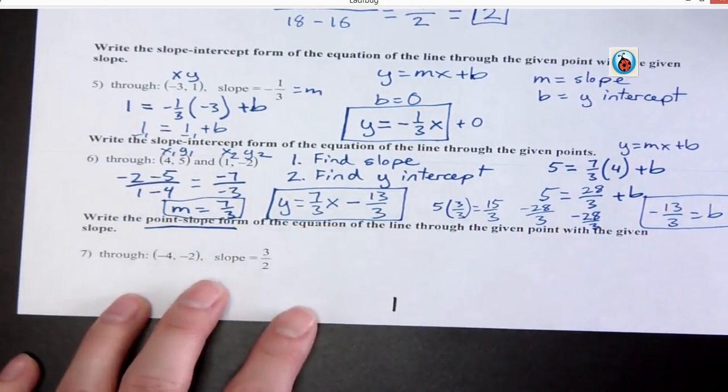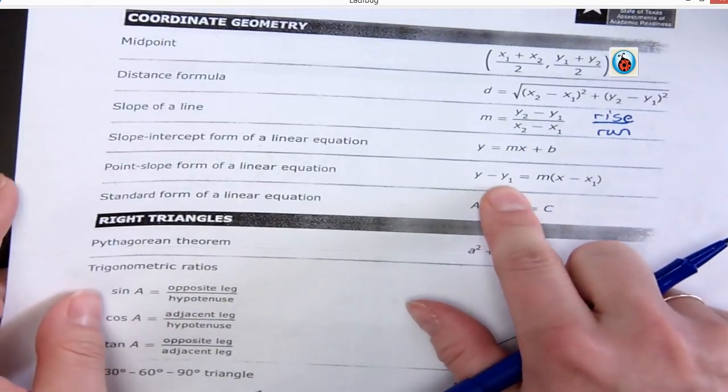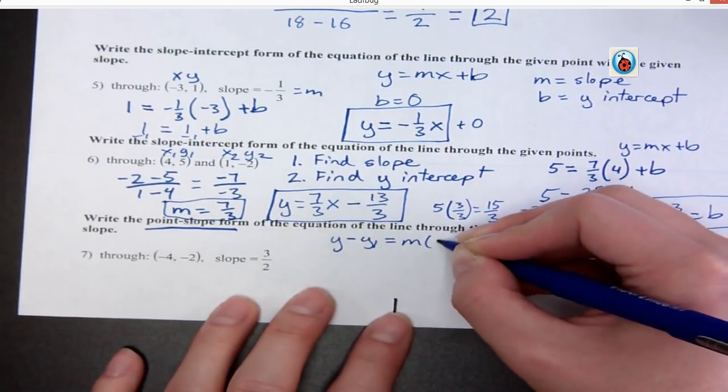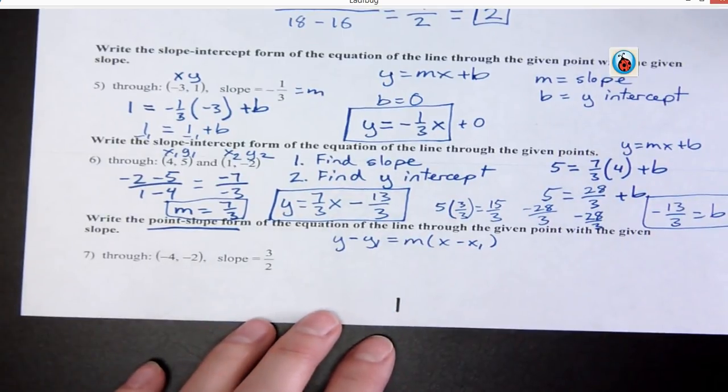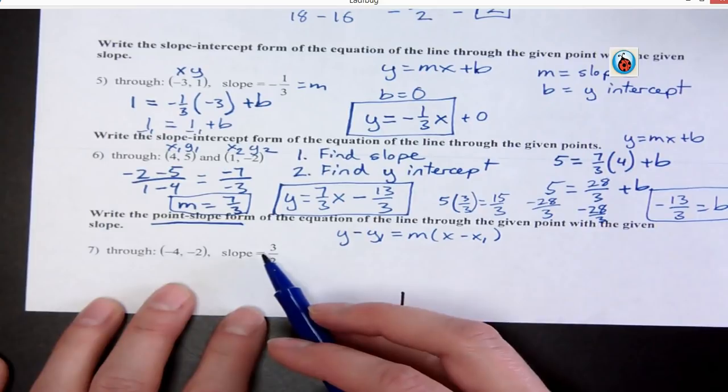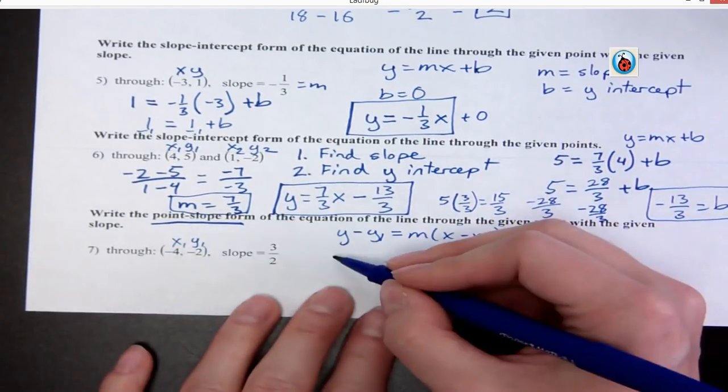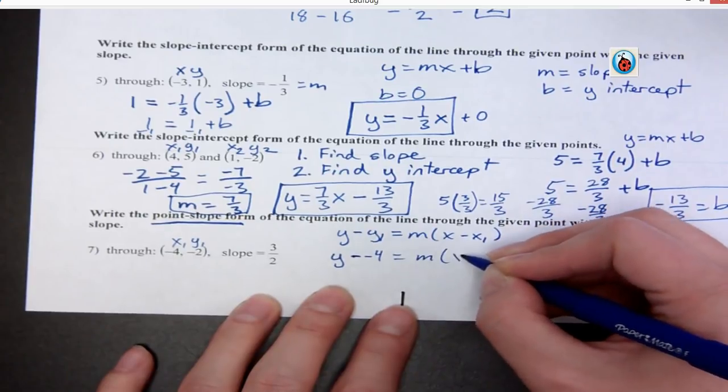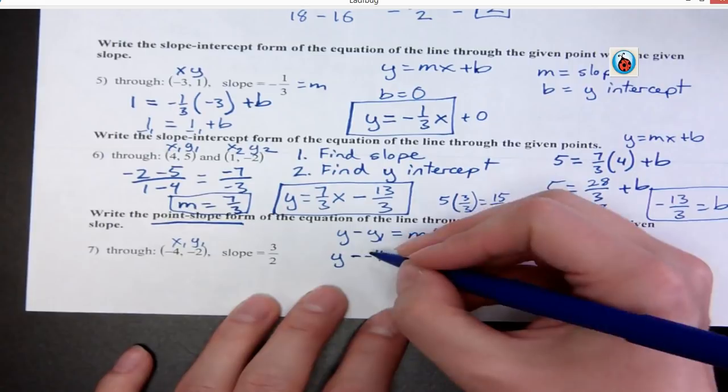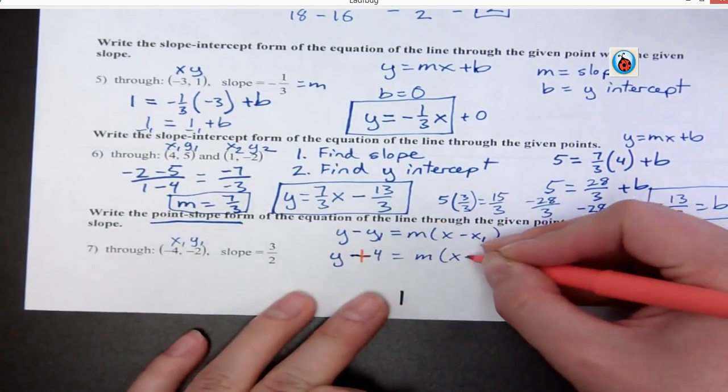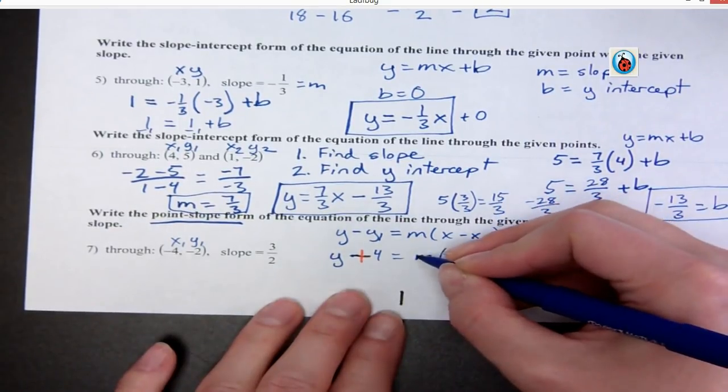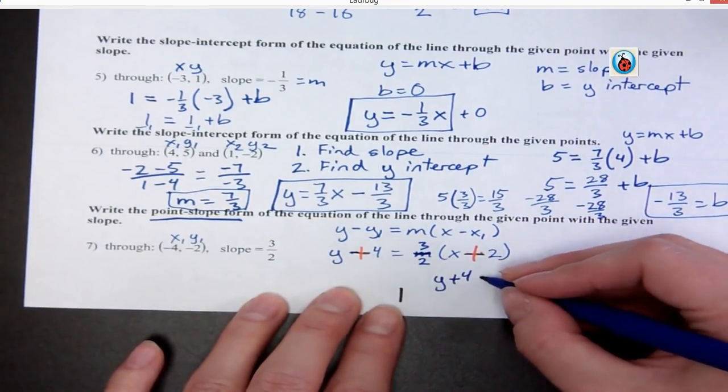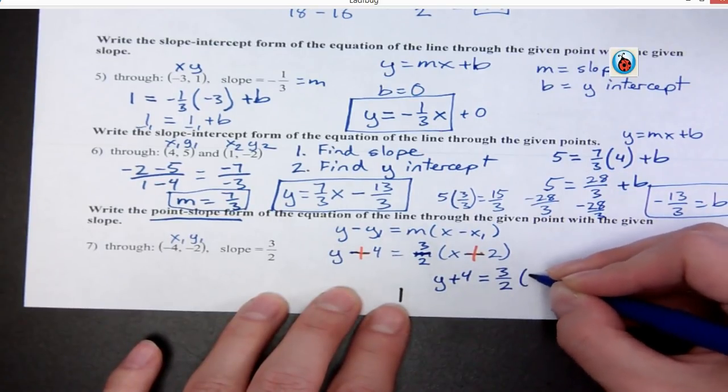All right, this last one is that point slope form that we talked about on the formula page. So point slope form is this one. And so it's Y minus Y1 equals M X minus X1. Okay, if you were asked to write the point slope form, all you do is this is your X1, Y1. You just plug it in. So Y minus negative 4 equals M X minus negative 2. And then you simplify by changing these both into plus signs. I'm sorry, I didn't plug my slope in. And so the slope is 3 over 2. So my final answer is Y plus 4 equals 3 over 2 X plus 2.